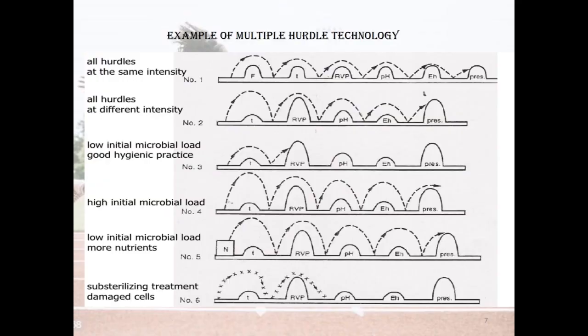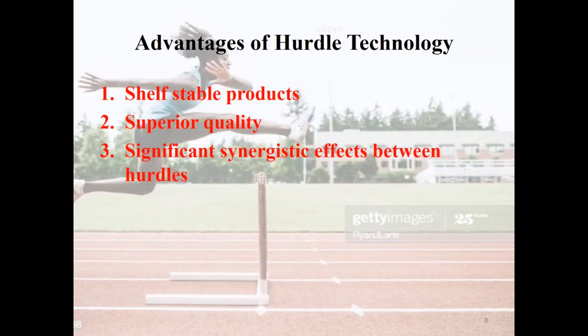This is an example of multiple hurdle technology. The first picture shows all hurdles at the same intensity. The second shows hurdles of different intensity. Other scenarios illustrated include low initial microbial load with good hygienic practice, high initial microbial load, and low initial microbial load with more nutrients and sub-sterilizing treatment causing damage to cells.